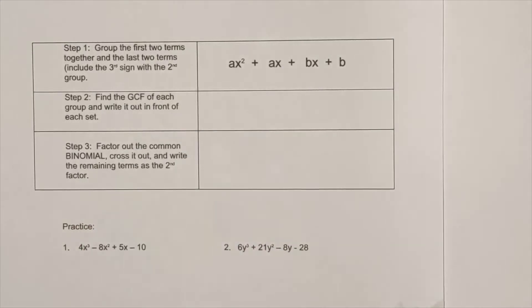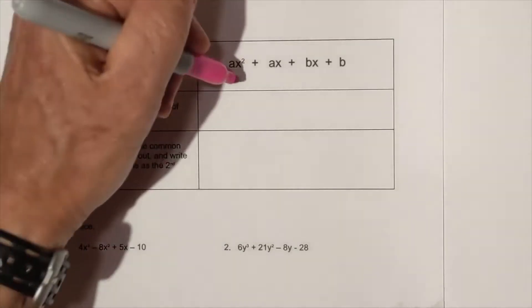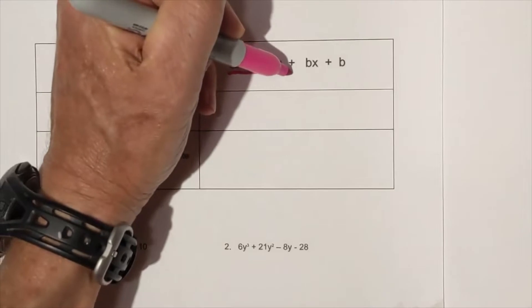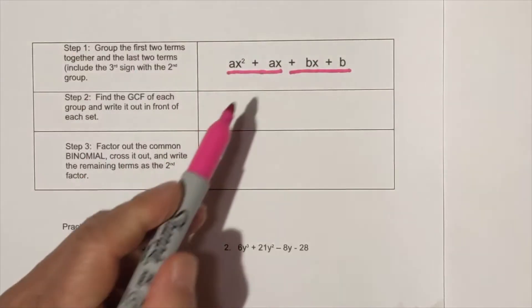So what we will do is here is group one and group two includes the sign. So that's step one.